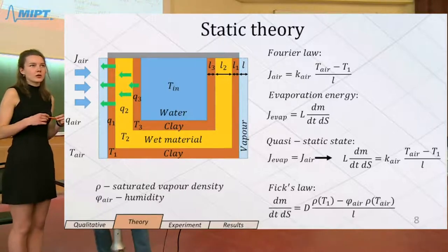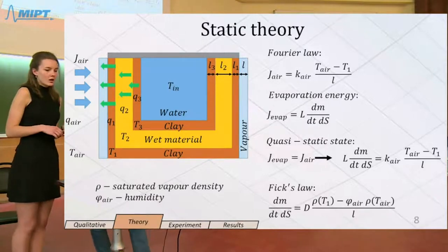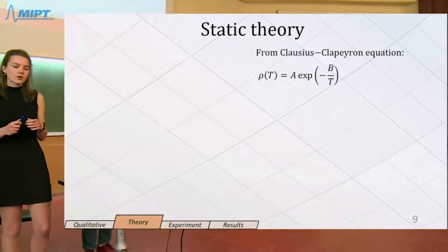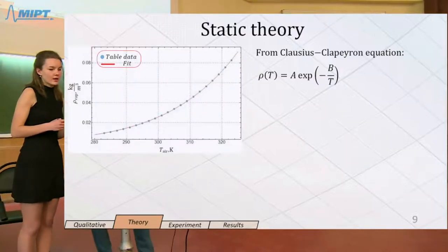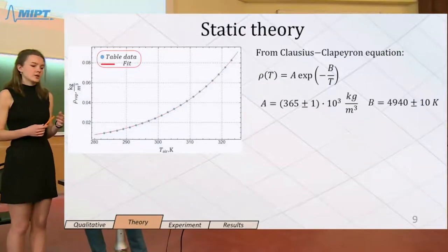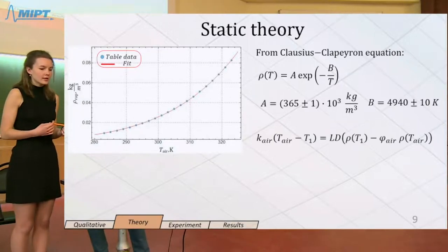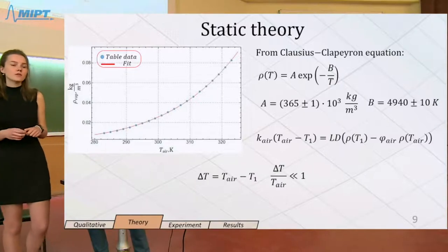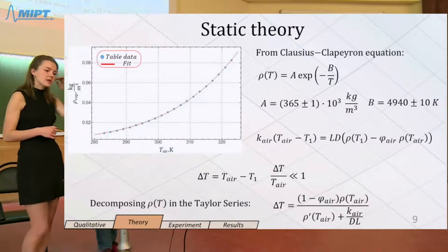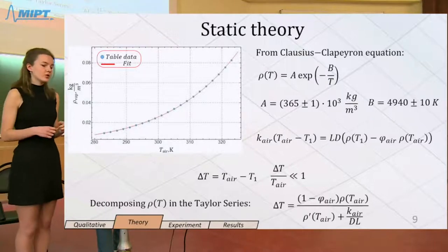Then we should derive the dependence of saturated vapor density on temperature, and we're using the Clausius-Clapeyron equation for that. We used table data and fitted it with an exponent. After that we found A and B. Under the assumption that temperature difference is small in our experiment, we decomposed this dependence in the Taylor series. And finally we got the expression for temperature difference.